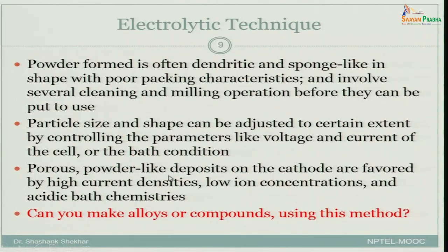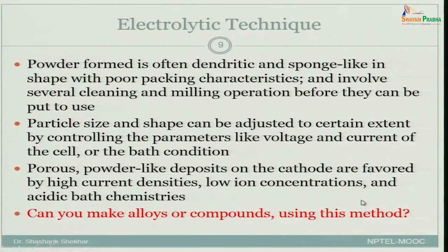Porous, powder-like deposits on the cathode are favored by high current densities. Not only high current densities, but also low ion concentrations and acidic bath chemistries favor the formation of porous and powder-like deposits.